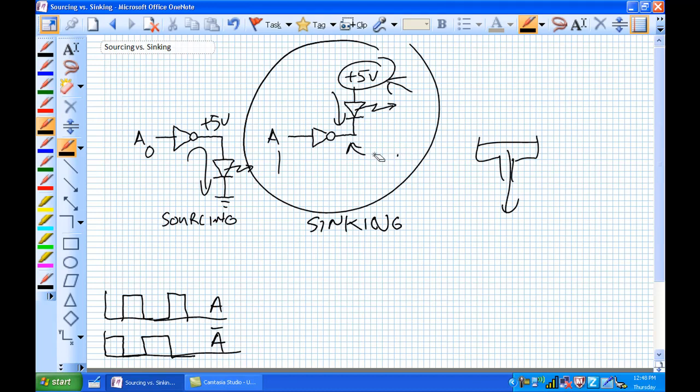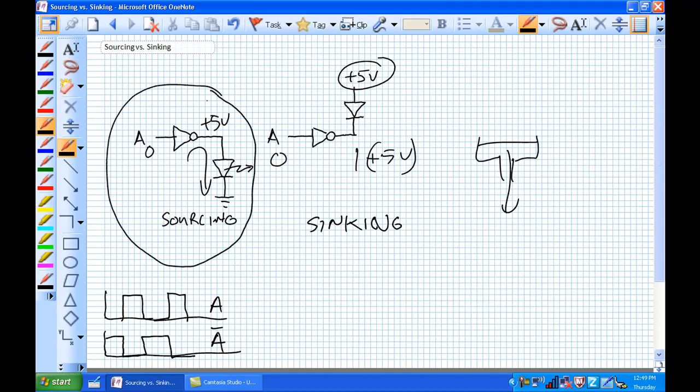So now in the opposite case here, what happens when A is a 0? It's a 1 there, i.e. a plus 5 volts for TTL logic. There is no potential difference and our LED does not light. So sourcing versus sinking, a very important concept in your labs because what causes your LEDs to light up? In this sourcing arrangement, a 0 causes it to light up. In this sinking arrangement, a 1 causes it to light up.